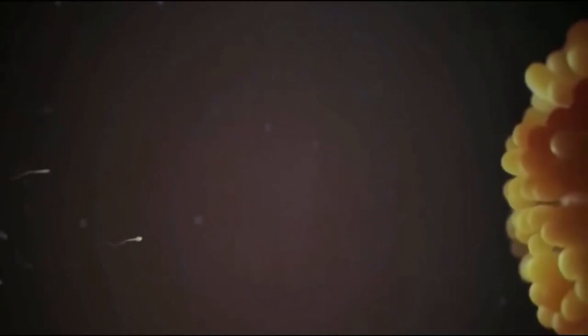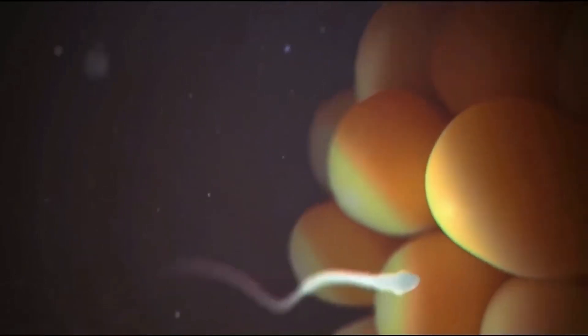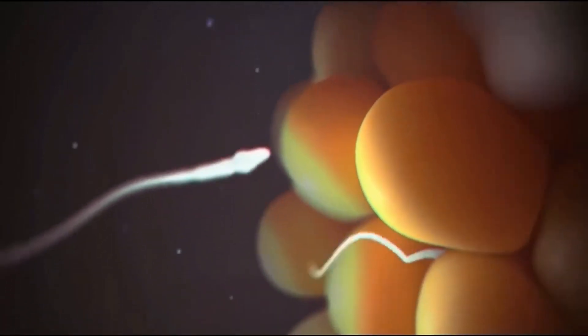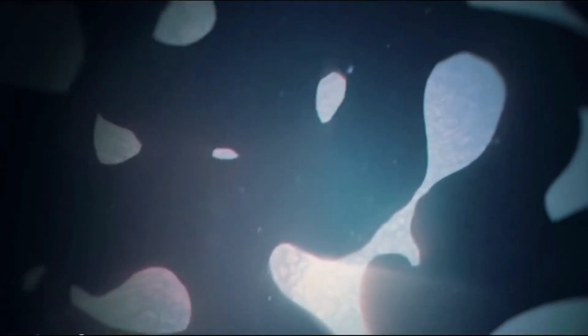When sperm reach the zona pellucida, they attach to specialized sperm receptors on the surface, which triggers their acrosomes to release digestive enzymes, enabling the sperm to burrow into the egg. Inside the zona pellucida is a narrow fluid-filled space just outside the egg cell membrane.